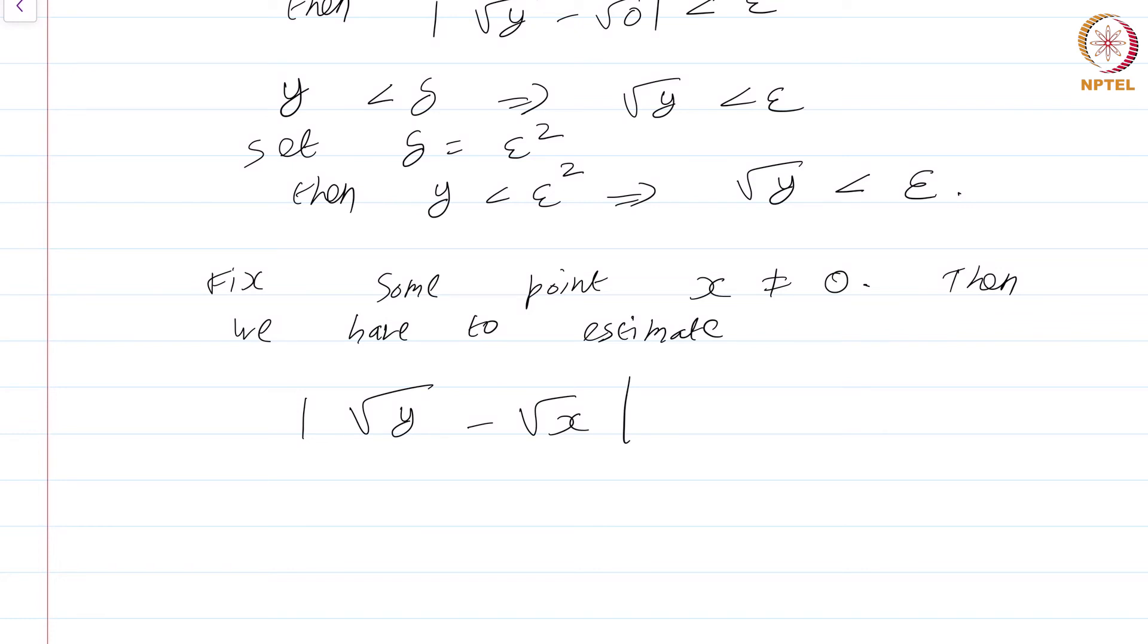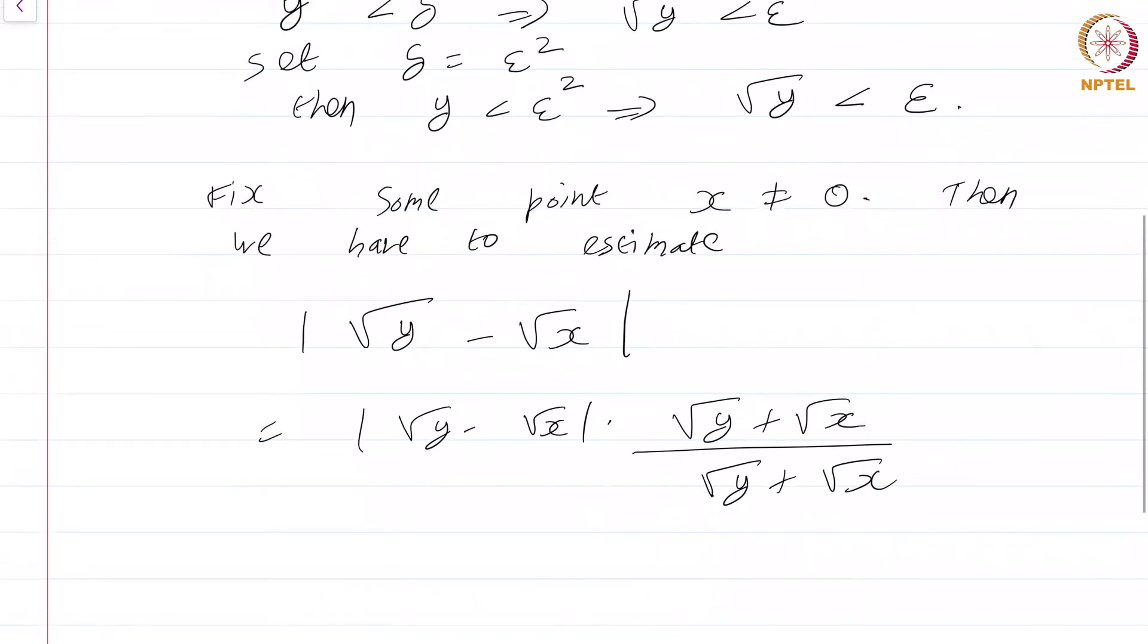Now, we use the oldest trick in the book. This is equal to square root of y minus square root of x times square root of y plus square root of x divided by square root of y plus square root of x. I can divide and multiply by this. One reason for that is the denominator is not 0, root y plus root x is not 0 here.